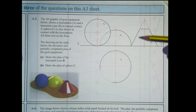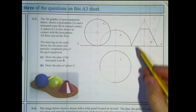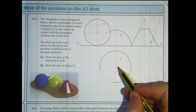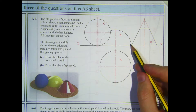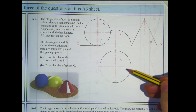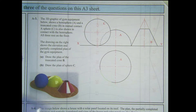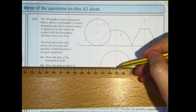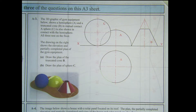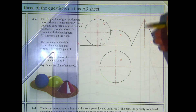Looking at the elevation, there's no hidden detail, which means the cone and hemisphere touch at a single point. This tells us the cone is directly horizontal from the centre of the hemisphere. If there were overlapping or hidden detail, we'd know one was in front of the other, but as there's none, they are horizontal to each other. I can take a horizontal line from the centre of the hemisphere, and the centre of the truncated cone will be there. The centre in plan is directly below its position in the elevation, so I project this line vertically down.